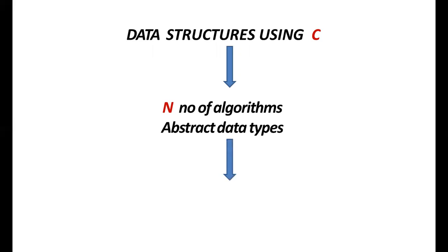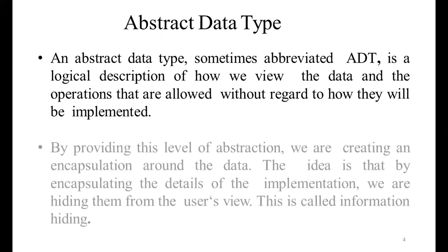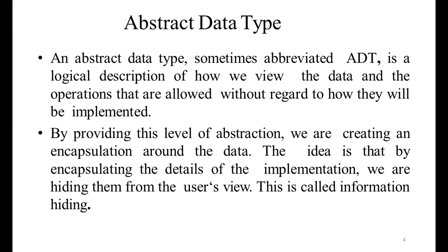Very simply, an abstract data type, sometimes abbreviated as ADT, is a set of rules. It is a logical description of how we can view the data and the operations that are allowed, without regard to how they will be implemented. By providing this level of abstraction, we are creating an encapsulation around the data. Encapsulation is nothing but the hiding of information — by encapsulating the details of the implementation, we are hiding them from the user's view. This is what is called information hiding.